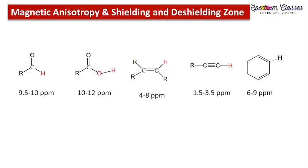Hello everyone, welcome back to Spectrum Glasses. This is another video on the topic of magnetic anisotropy and shielding and deshielding zones in NMR spectroscopy. In my previous video I discussed the molecule alkene, covering the direction of the current and the induced magnetic field lines. In this video I again explain all such things with reference to the molecule carbonyl, which also has a C double bond O group, and because of this C=O group we have the magnetic anisotropy effect.